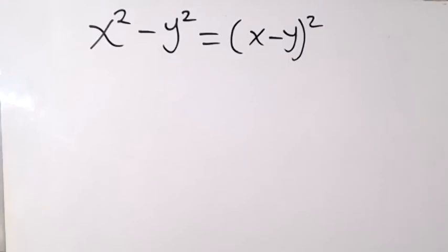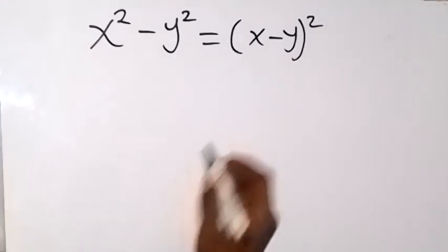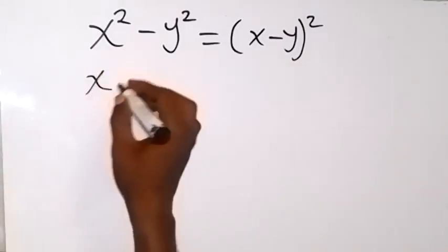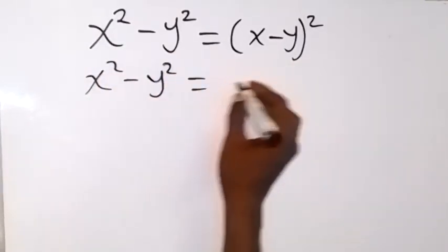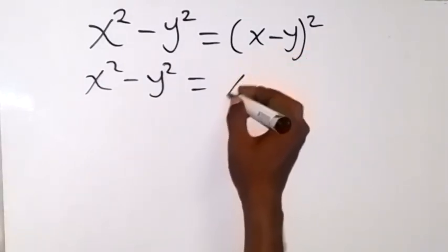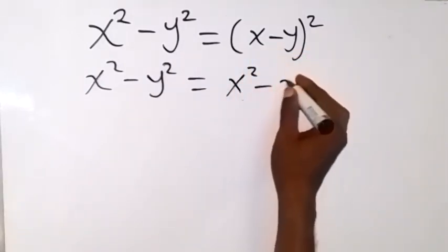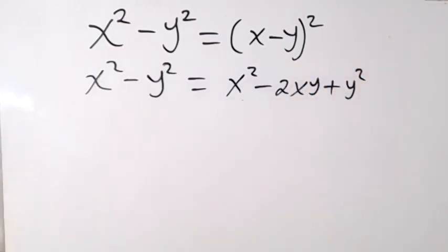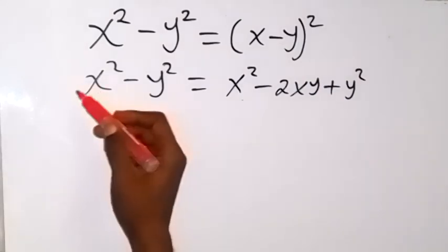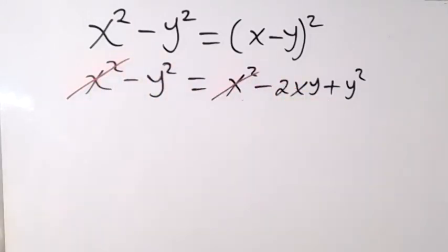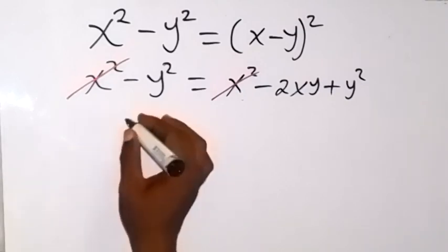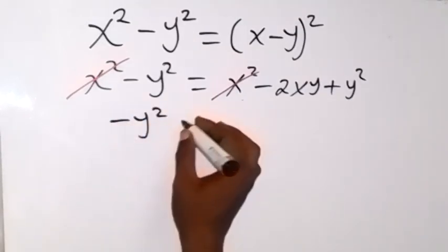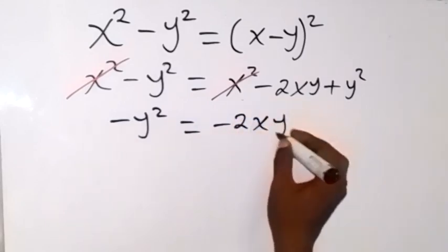We want to solve this problem. Let's expand what we have here. We can see this is x squared minus y squared equals the expansion of (x - y) squared, which gives us x squared minus 2xy plus y squared. From here, x squared cancels x squared, so we are left with minus y squared equals minus 2xy plus y squared.